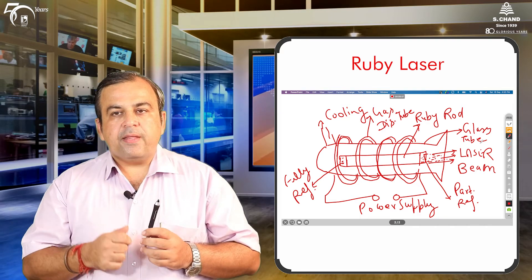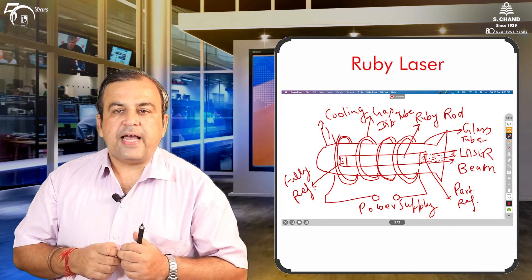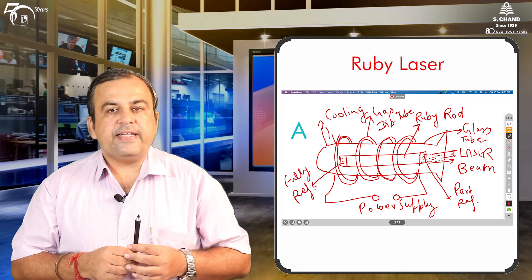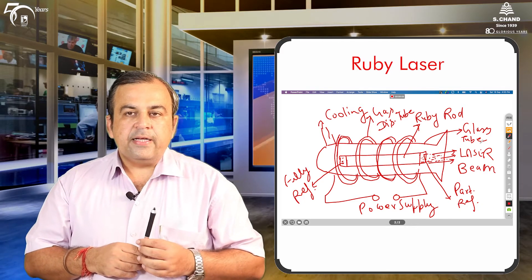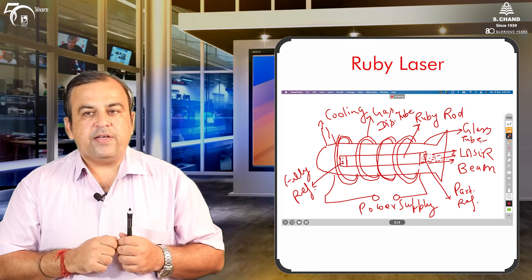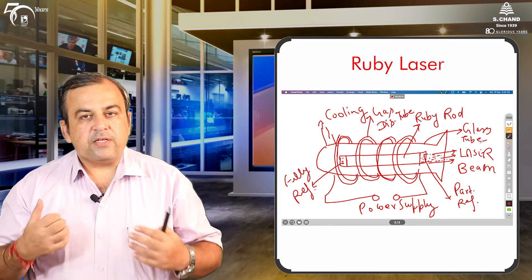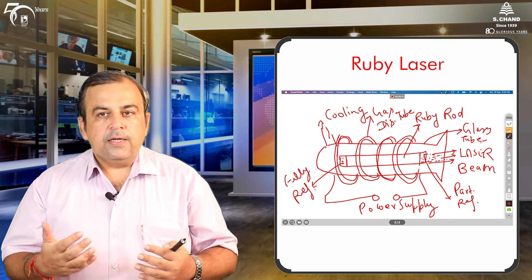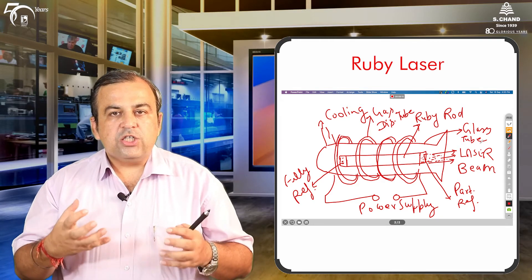When we refer to the Ruby rod, it is mentioned here as AB. Part A in the figure shows a fully reflecting end face, and part B shows the partially reflecting end face. The light coming out of the partially reflecting end face forms the laser beam. The pumping system — achieved with the helical xenon discharge tube — ensures the criterion of population inversion is fulfilled.